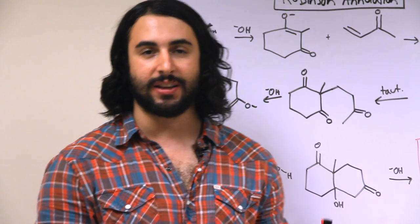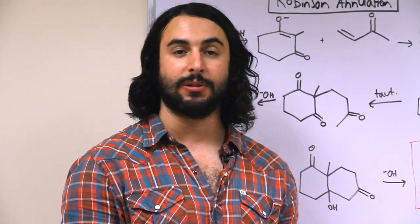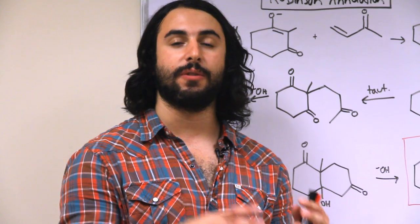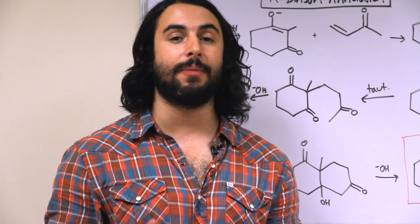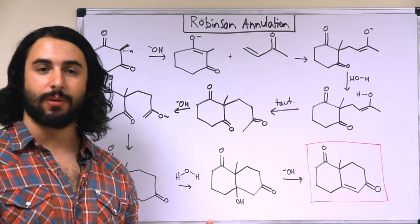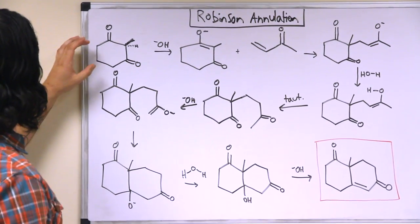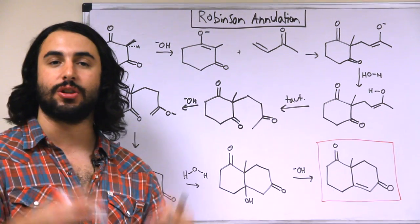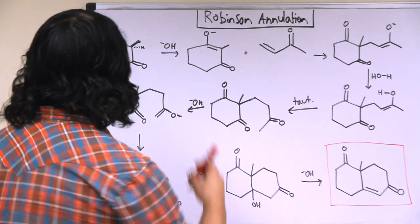So the Robinson annulation is actually a combination of these other enolate reactions that we've been looking at. It is actually a Michael addition followed by an intramolecular aldol condensation. So this is the reaction that Robinson did here. We're going to look at this substrate and we're going to generate an enolate just like we did for the aldol and the Michael stuff.